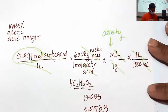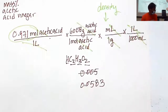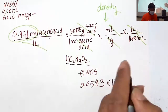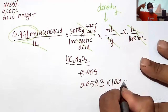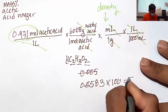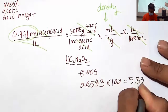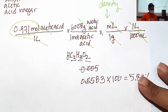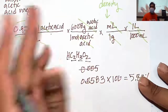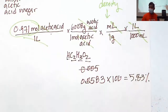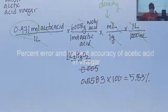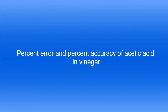Multiplying by 100 to convert to a percentage gives about 5.83%. So the mass percentage of acetic acid in the vinegar is 5.83%.